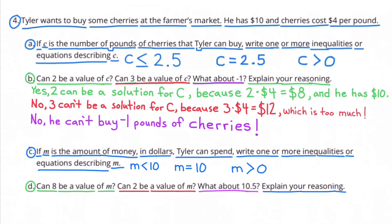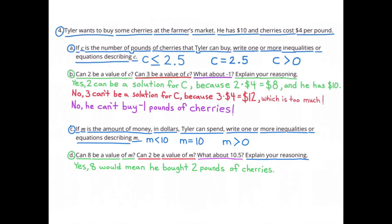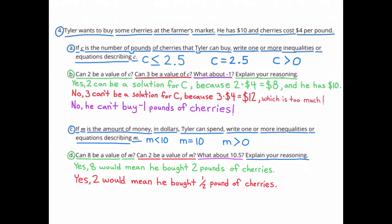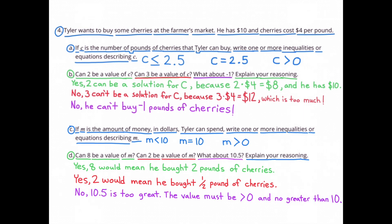D. Can 8 be a value of M? Can 2 be a value of M? What about 10 and 5 tenths? Explain your reasoning. Yes, 8 would mean that he bought 2 pounds of cherries. Yes, 2 would mean he bought a half a pound of cherries. And no, 10 and 5 tenths is too great. The value must be greater than 0 and no greater than 10.